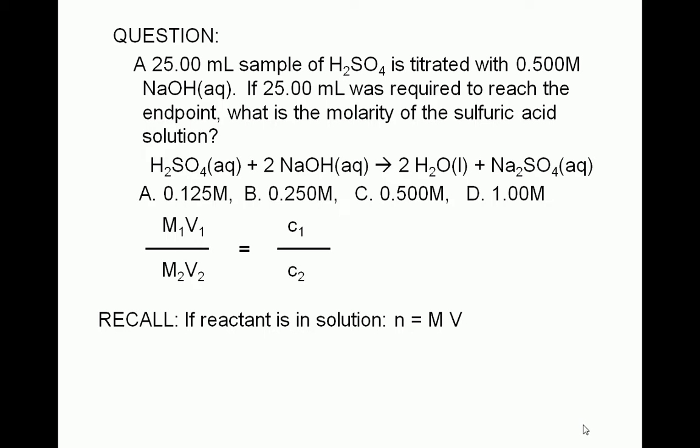At this point we simply assign the quantities given in the problem to the variables in our equation. Let's refer to sulfuric acid as reactant 1 and sodium hydroxide as reactant 2. It doesn't matter which one you call reactant 1 and which one you call reactant 2, but the calculation is simpler in this case if you take sodium hydroxide as reactant 2 because we have enough information to immediately calculate the moles of sodium hydroxide.